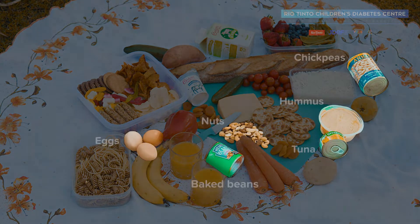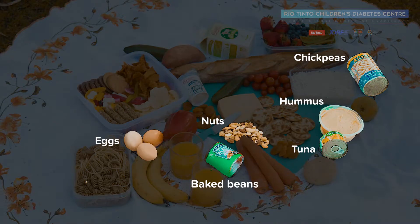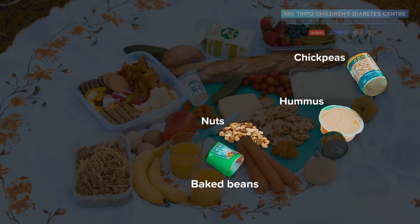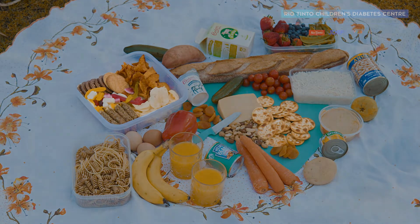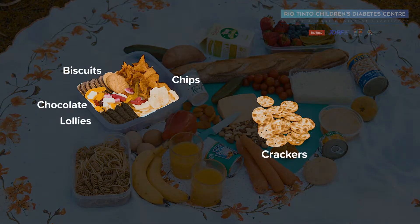Do meat and alternatives contain carbohydrate? Meat, fish and eggs don't contain carbohydrate, but all legumes and nuts do. Lastly, do discretionary foods contain carbohydrate? Yes, all discretionary foods contain carbohydrate.